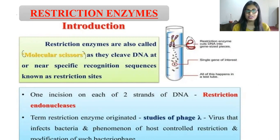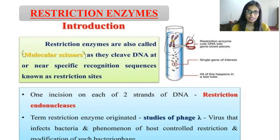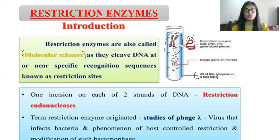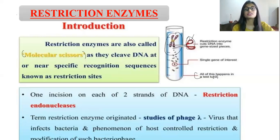These restriction enzymes help to cut DNA at a specific site. You can see this all happens in a test tube where DNA is present. When restriction enzymes are added to that DNA, they have the capacity to cleave or cut DNA at specific sequences.